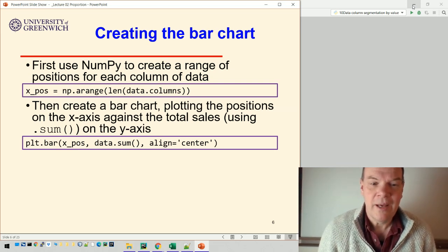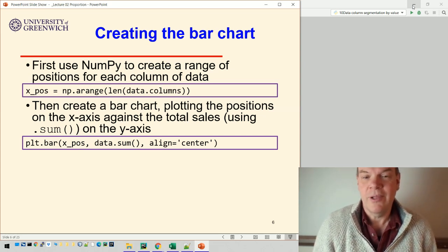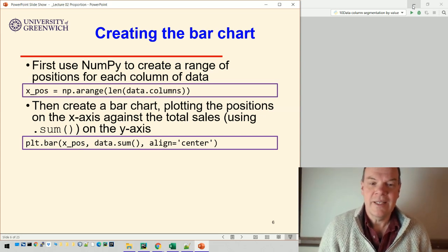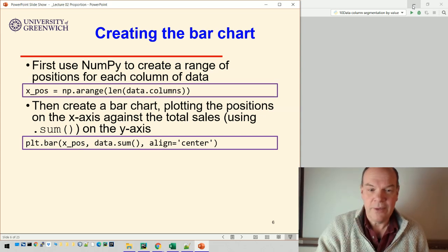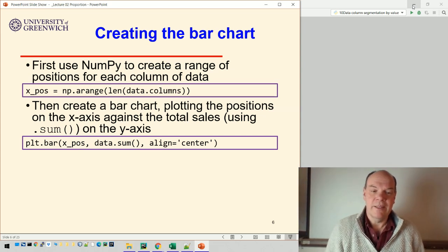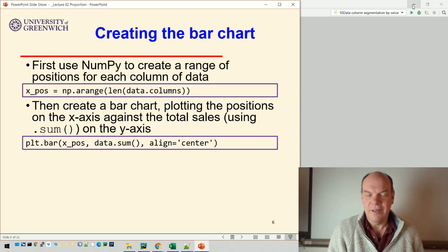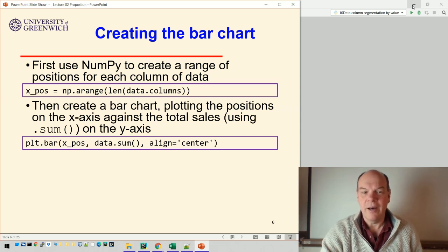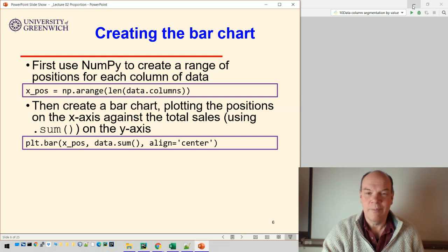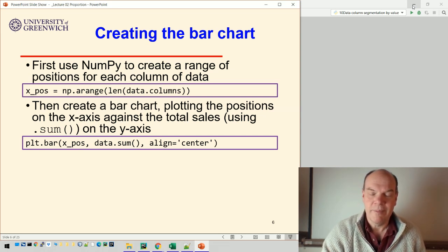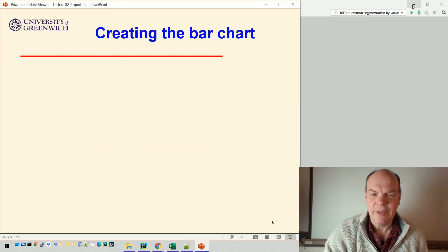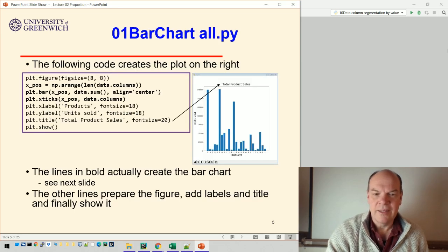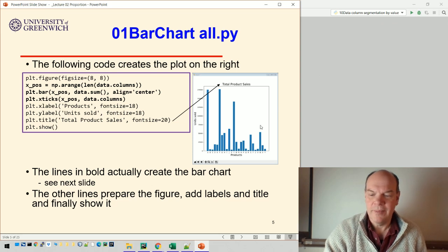And then all we do is create a bar chart against those positions. So we're plotting the positions on the x-axis against the total sales on the y-axis using data.sum. At position one, we plot the sum of data for that particular product. So product A is in position one, and the sum of the data for that product is plotted in the same position. And we align them centrally, that just means they appear aligned in the middle of that position.